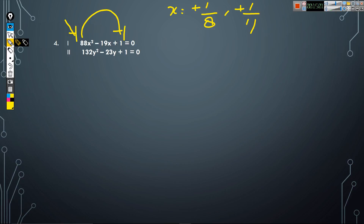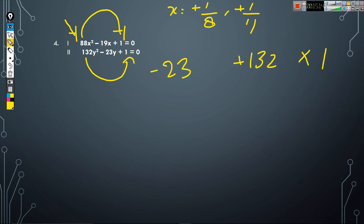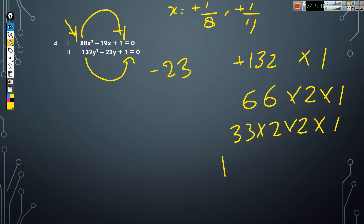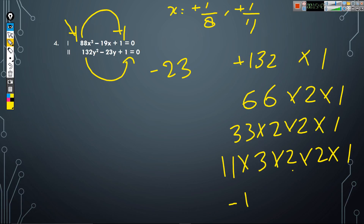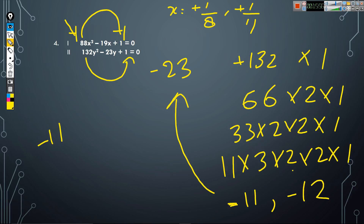Now we will find the value of y: 132y² - 23y + 1 = 0. Multiply 132 by 1 and we need to bring minus 23 because the coefficient of y is minus 23. Factorize 132: 6 × 12 × 2, then 33 × 2 × 2, then 11 × 3 × 2 × 2. We need minus 11 and minus 12, since minus 11 + minus 12 = minus 23 and minus 11 × minus 12 = plus 132. Write the opposite signs: plus 11 and plus 12. Divide by the coefficient of y², which is 132. So y = 11/132 = 1/12 and y = 12/132 = 1/11.